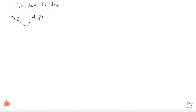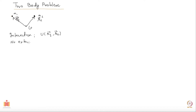These two particles are interacting with each other and the potential energy due to that interaction is u of r1, r2. The interaction is given by the potential energy r1, r2. It is a function of r1 and r2 and there are no external forces on this system. This is what is a two-body problem: you have two particles, two bodies and they are interacting in a certain way.